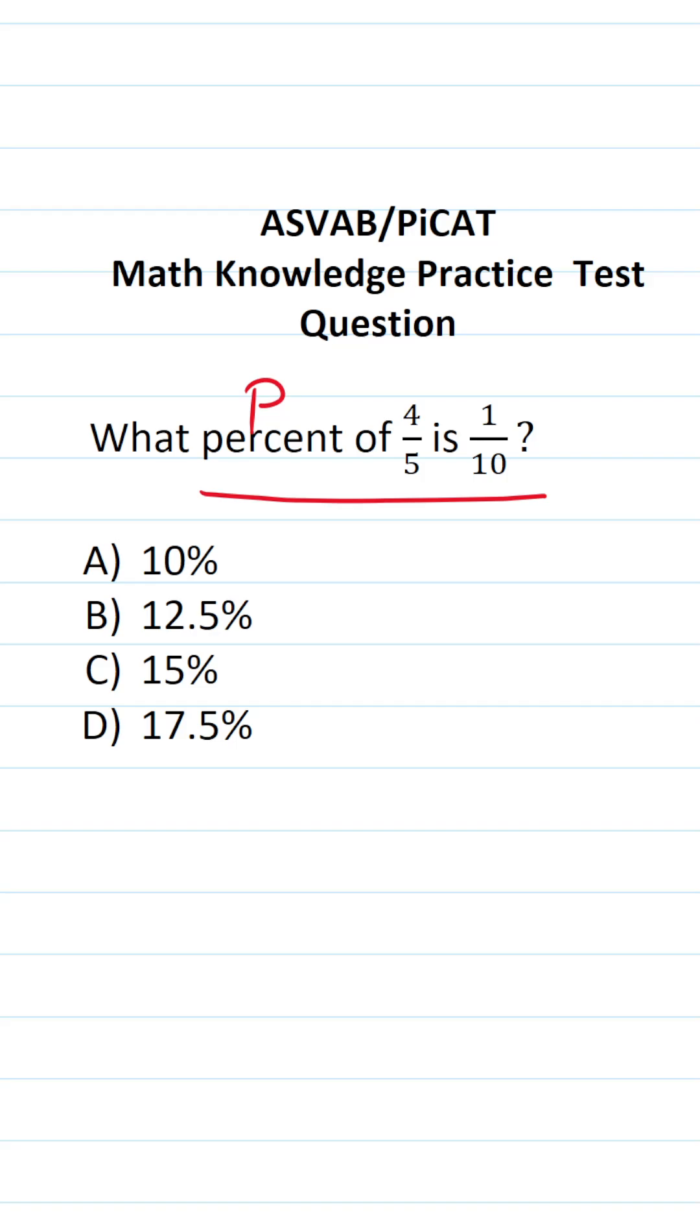What percent? Percent is unknown, so let's call it P. Of in math means multiply, so P times four-fifths is, in math means equal, one-tenth. All right, so this says what percent of four-fifths is one-tenth?